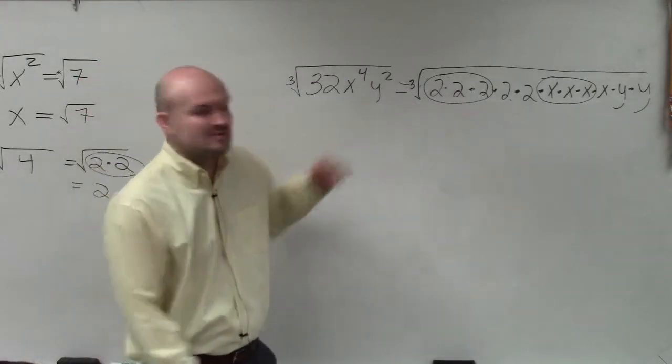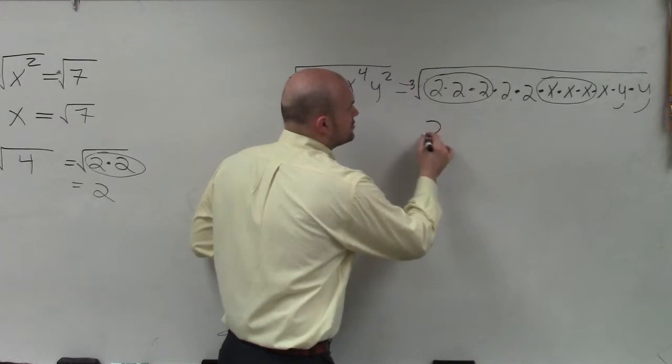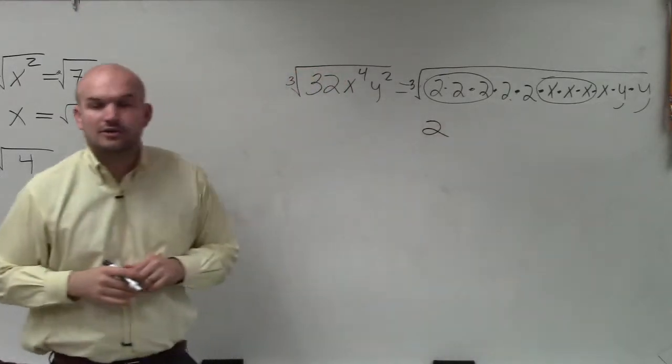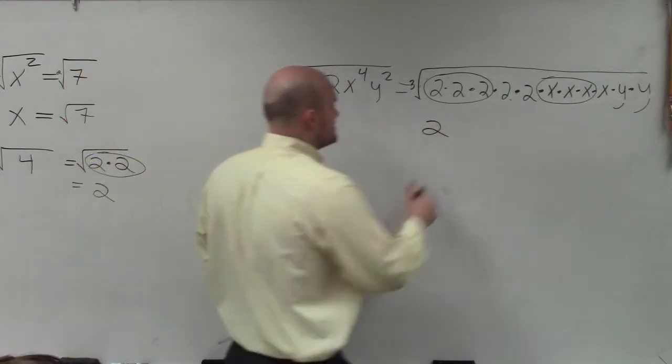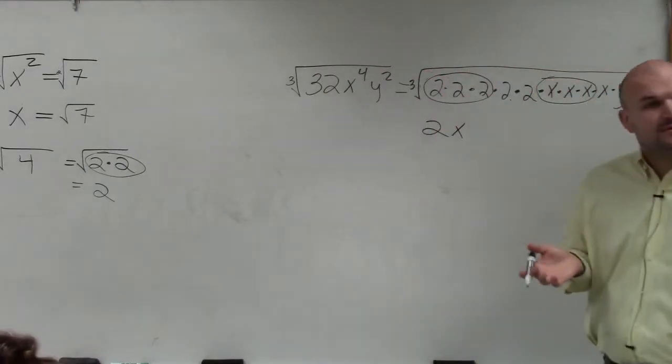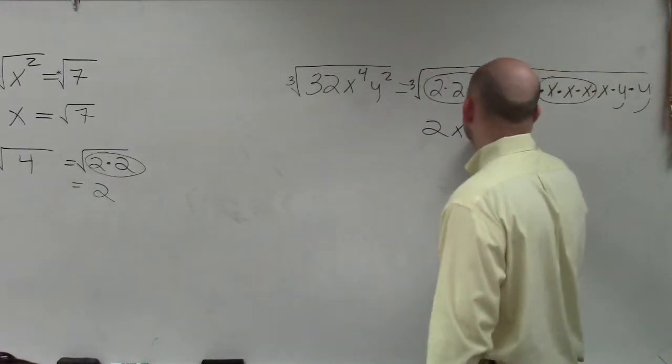And the cube root of 2 times 2 times 2 is just 2. The square root or the cube root of x times x times x is just x. Everything else, I don't have groups of three, so I'm going to leave under my root.